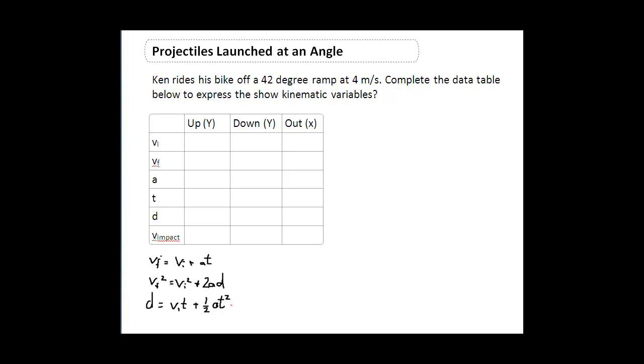In this problem, Ken is riding his bike off of a 42 degree ramp at 4 meters per second. We're looking to complete the data table below to express all the kinematic variables in this problem. We have initial velocity, final velocity, acceleration, time, displacement, and also what was the impact velocity.